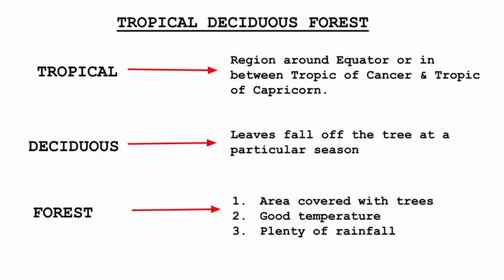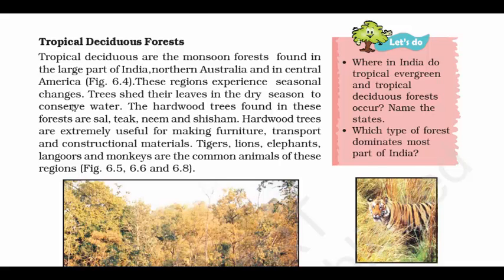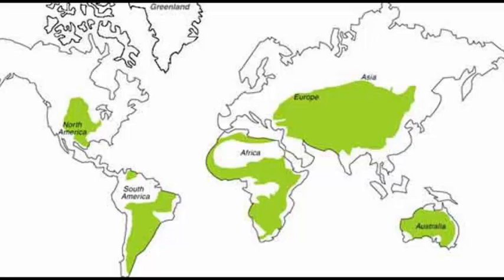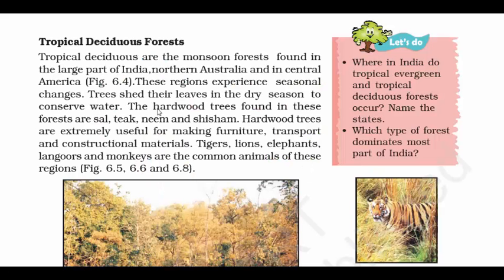Coming to Tropical Deciduous Forest. Again, we know the meanings of tropical and forest. Deciduous means the point in time when leaves fall off the trees — like autumn, when leaves shed from the trees. You will find large parts of such forest in India, Northern Australia, and Central America. The trees shed their leaves to conserve water because they cannot provide water to millions of leaves. So they shed the leaves to allow the stem — the wooden part — to retain all the water. Some hardwood trees found here are sal, teak, neem, and sesham.